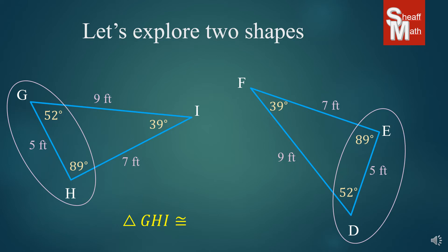Now if we were to say that triangle GHI was congruent to the other triangle, we would have to put the triangle into the exact same corresponding order. So GHI — I always look at the degrees and it goes from 52 to 89 to 39. So then on the right side, I look at 52, 89, and 39, and that goes DEF. So this is the proper way to do it. If you have those letters in any other order, it's incorrect.